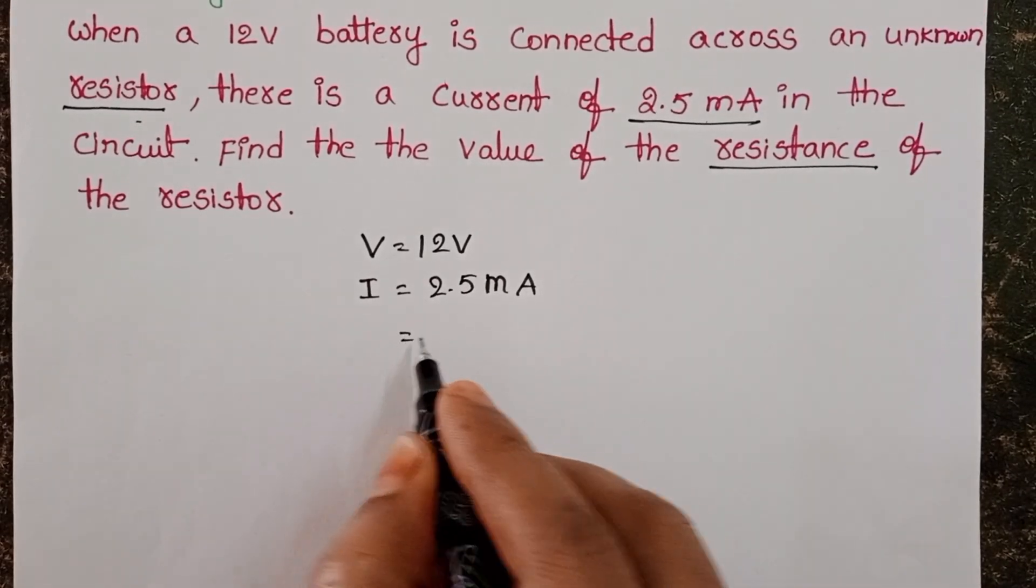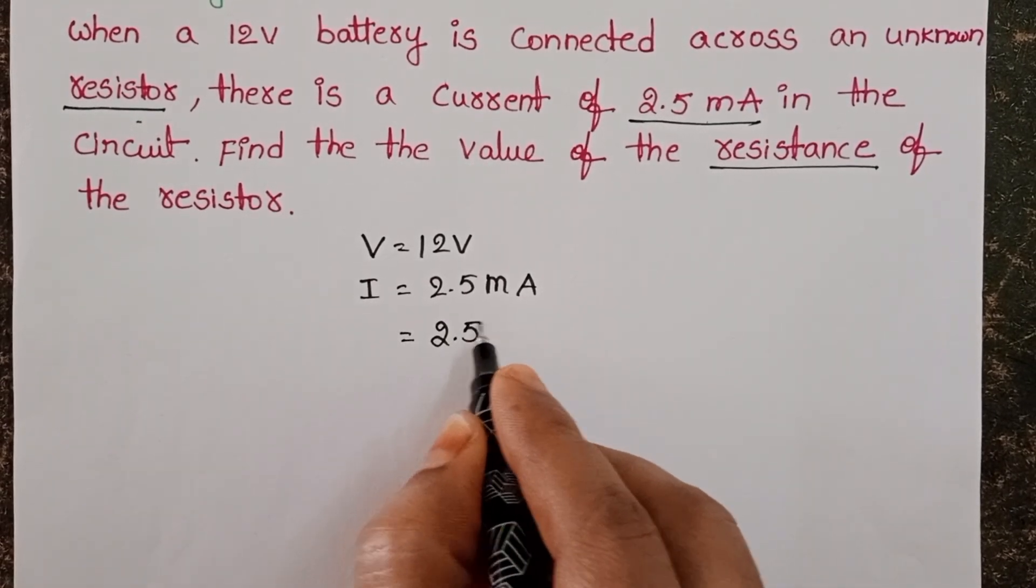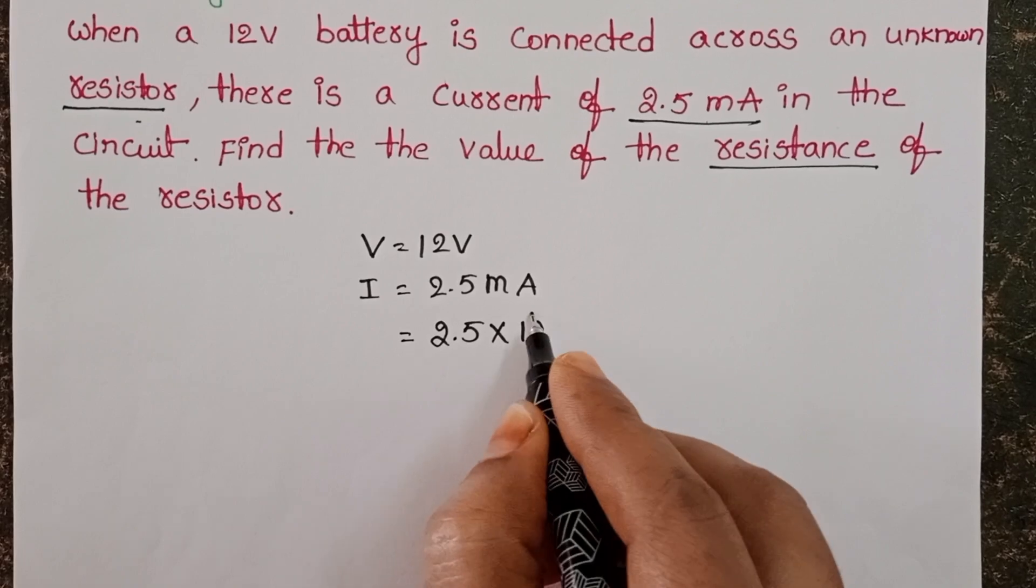Convert milliamperes to amperes. Milli means 10 power minus 3.